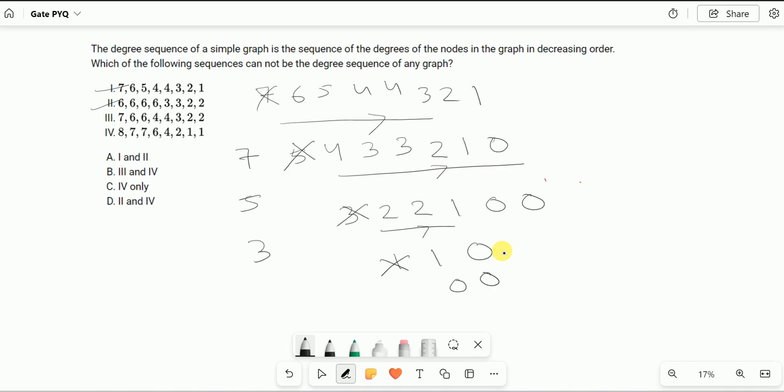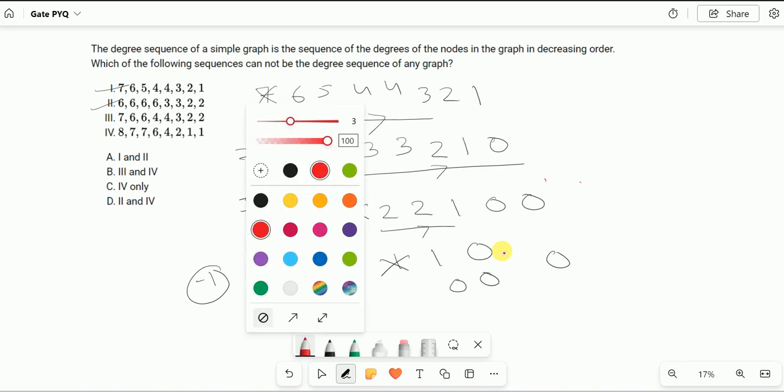In the end if you are getting 0, it means this is a degree sequence of a simple graph. If you are getting minus 1, then that means this is not a degree sequence of a simple graph.